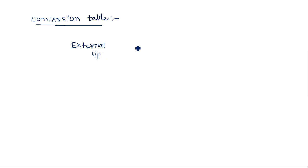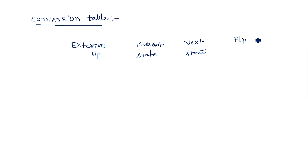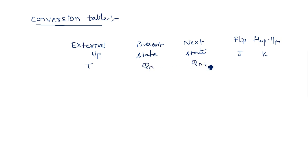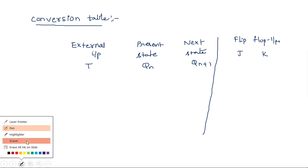The conversion table has: external input, present state, next state, and flip-flop inputs J and K. The external input here is T — the only input for the T flip-flop. The present state is Qn and the next state is Qn+1.